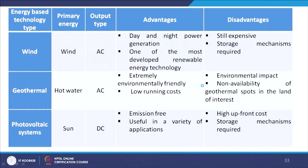One of the most commonly used distributed generation sources today is wind. The primary input is naturally wind and the output type is AC. The merits are day and night power generation and it is one of the most developed renewable energy technologies. The disadvantage is that it is quite expensive, requires a storage mechanism, and may be seriously affected by climate disasters.